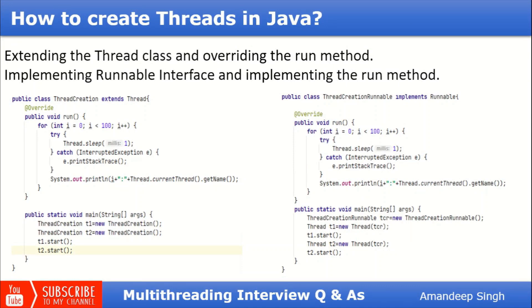The next question is: what are the different ways to create a thread? There are two ways. The first is extending the Thread class and overriding the run() method. We create a class that extends Thread, override its run() method, and provide whatever implementation we want. In the main method, we create two threads by instantiating that class and calling the start() method on them, so both threads execute that code simultaneously.